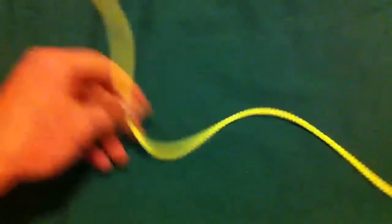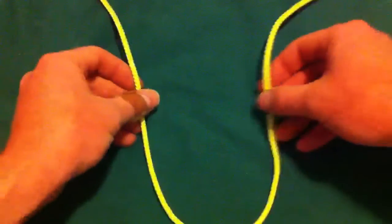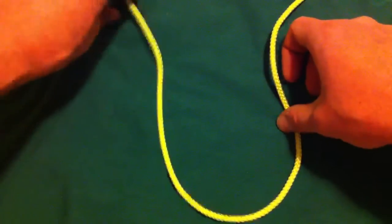Let's see if I can get this on the camera. There's my loop. I'm going to first make a loop on this standing end of the rope like that.